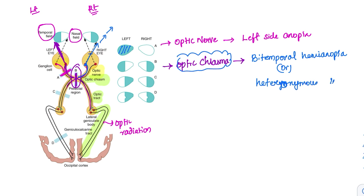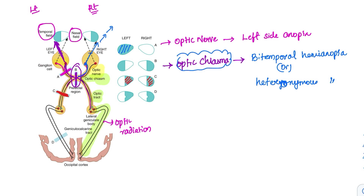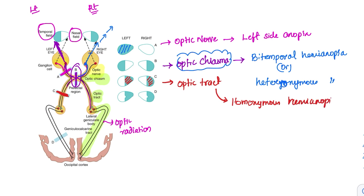The third lesion is at the optic tract. In the optic tract, the nasal fibers focusing the opposite temporal field and the temporal fibers focusing the nasal region of the same side will be lost together. This results in loss of the same side visual field in both eyes, which is called homonymous hemianopia.